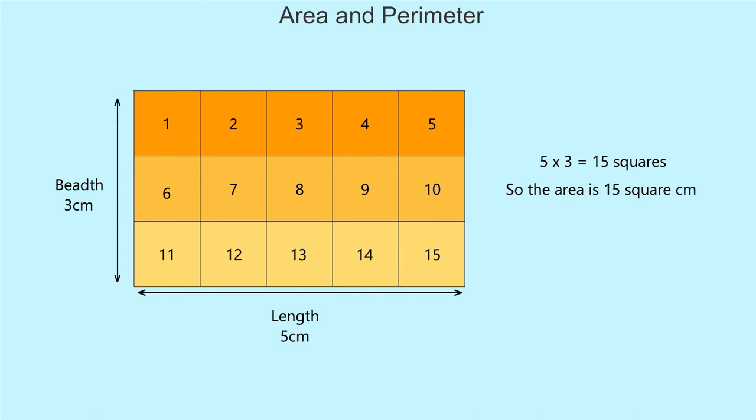Thus, the formula is area equal to L into B where L is the length of the rectangle and B is the breadth of the rectangle.